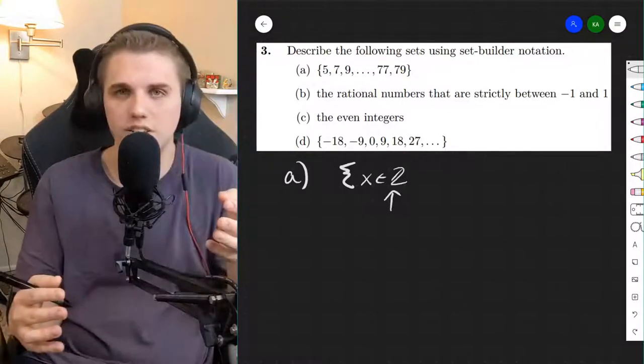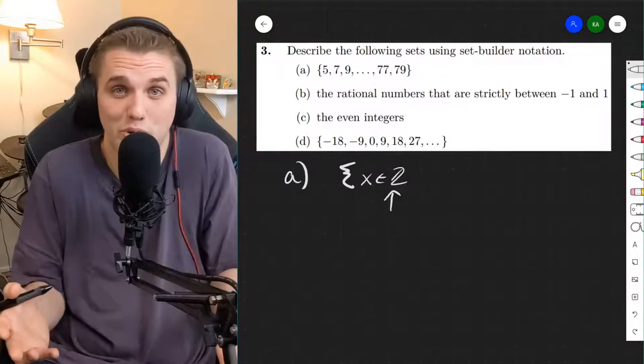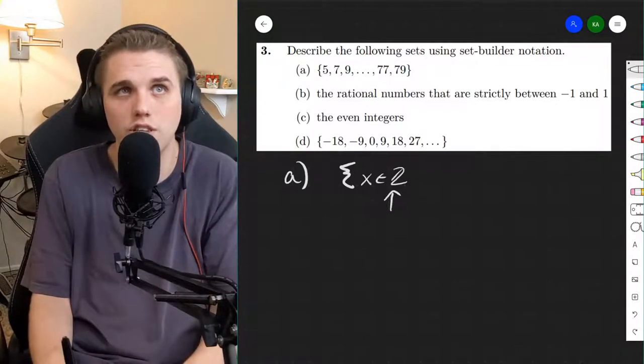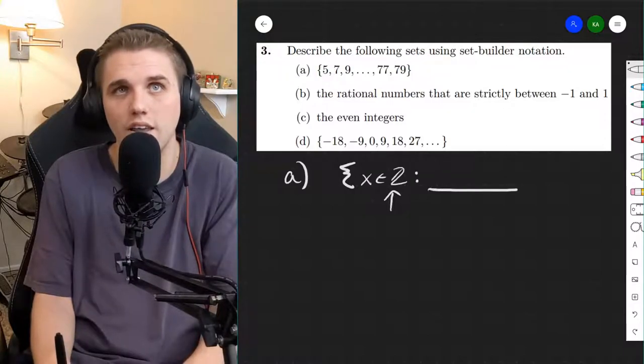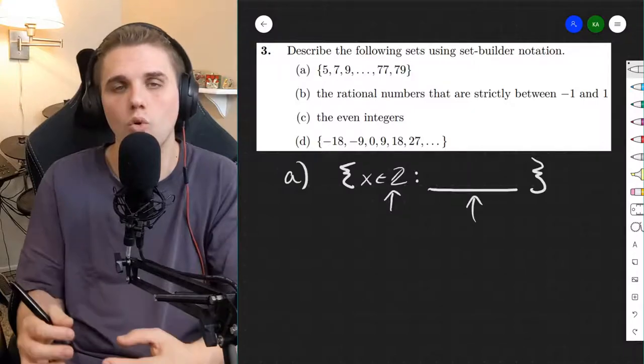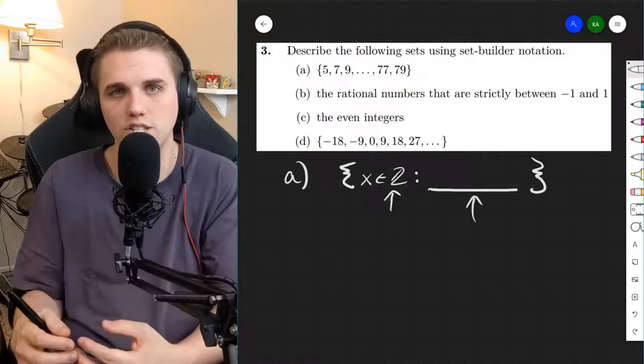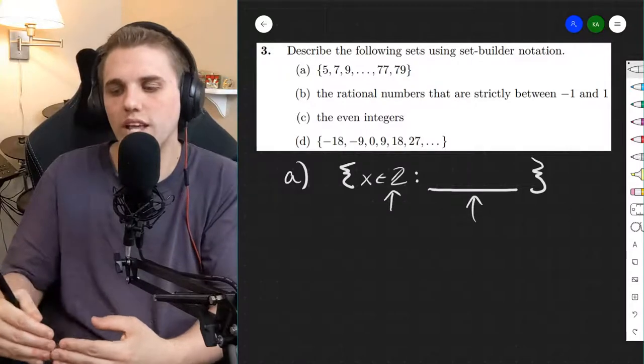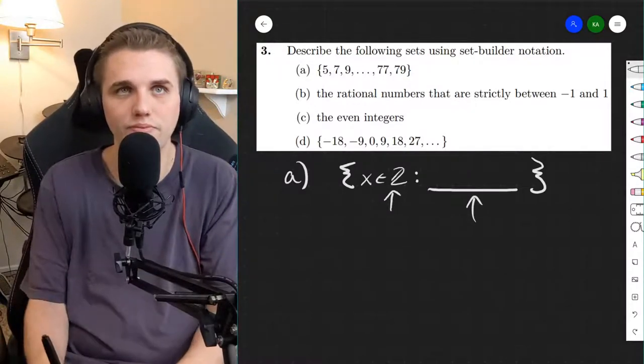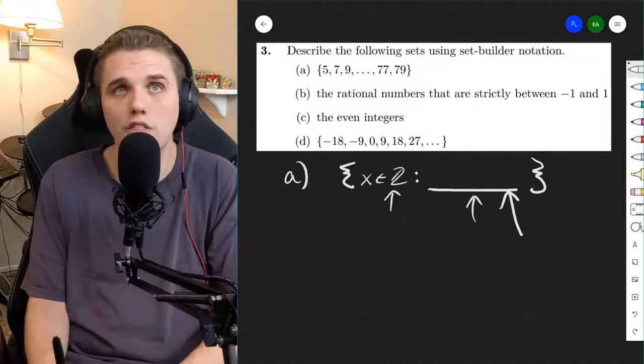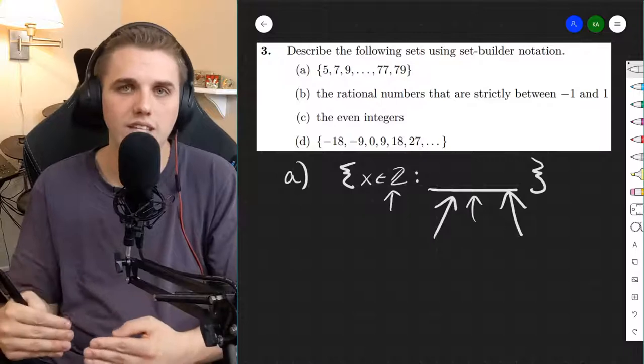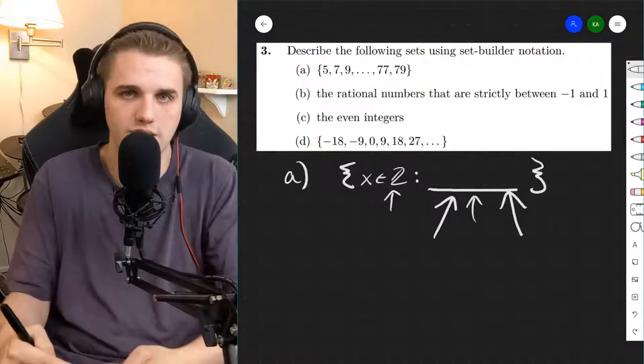You can also say that these are complex numbers, even. Whatever universe you're working in, you need to make sure that you clarify on the right side what it is in this universe that we're grabbing. What rule do we apply to all of these elements to establish what it is that you need to do in order to get into the set? The way I think about this portion right here is it's kind of like a gate to enter into the set. It's the rule.